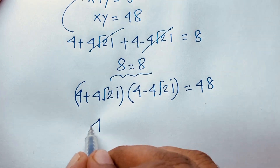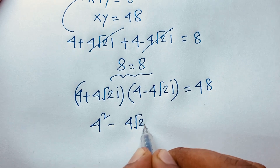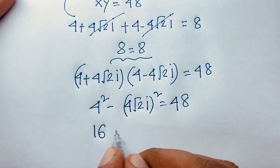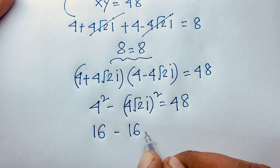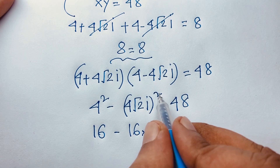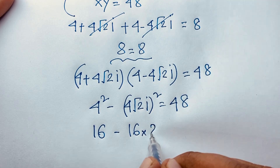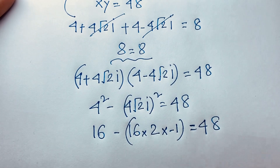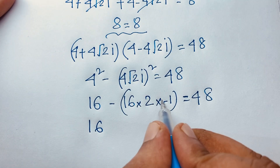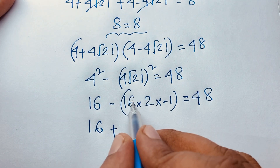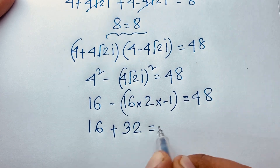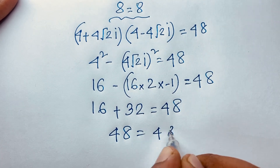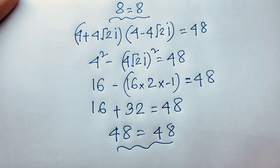For the second equation x times y equals 48: (4 + 4√2·i)(4 − 4√2·i). Using the difference of squares formula (a + b)(a − b) = a² − b², we get 4² − (4√2·i)² = 16 − 16·2·(−1) = 16 + 32 = 48. So the left-hand side equals 48, which matches the right-hand side. Verified!